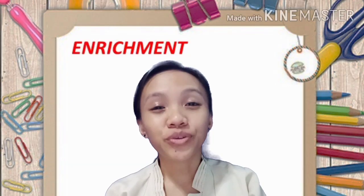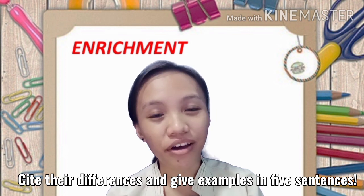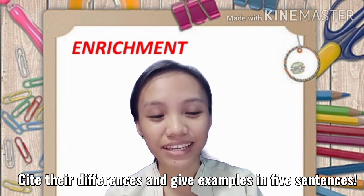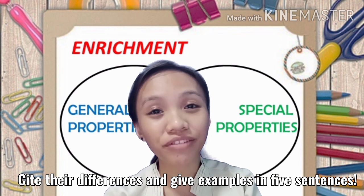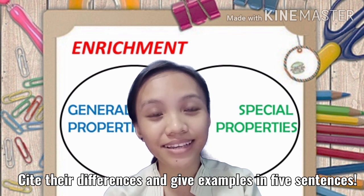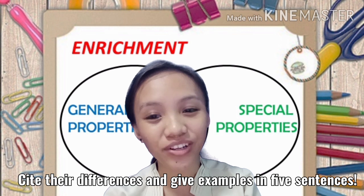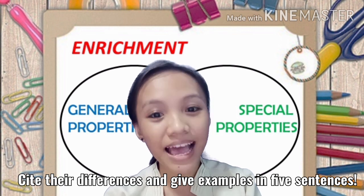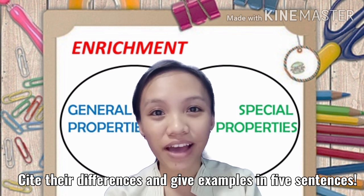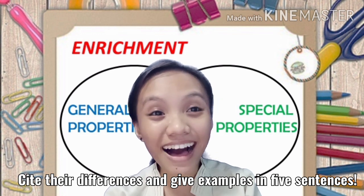To enrich what we've learned, let's have another activity. You just have to cite the major differences between general and special properties of matter with corresponding examples, at least five sentences. Good luck!